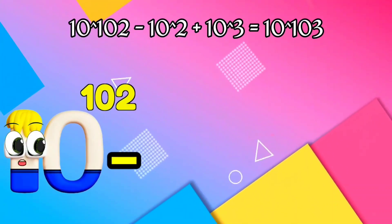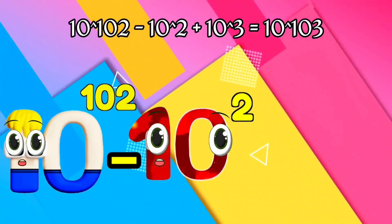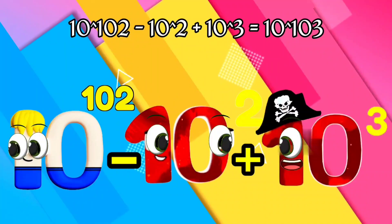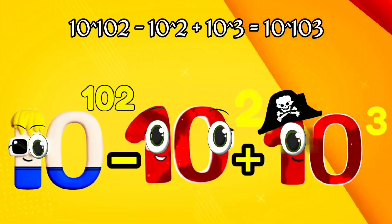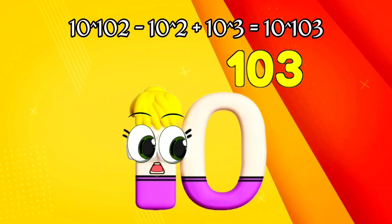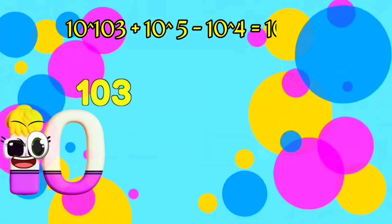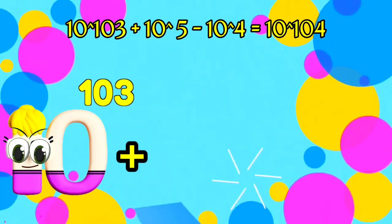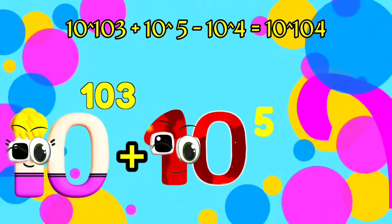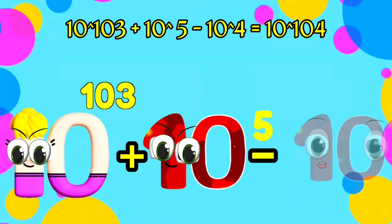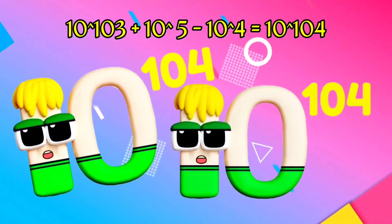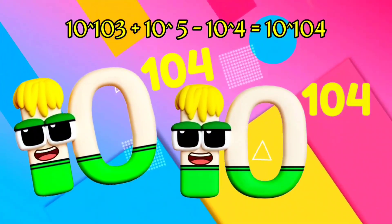I am Googol with 100 zeroes. Plus I'm 1,000 and I've got three zeroes. Equals I am Googol with 100 zeroes. I am 100,000 and I have five zeroes. Minus I'm 10,000 and I've got four zeroes. Equals I am Googol with 100 zeroes.